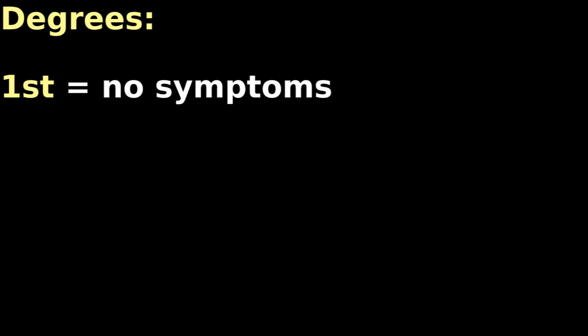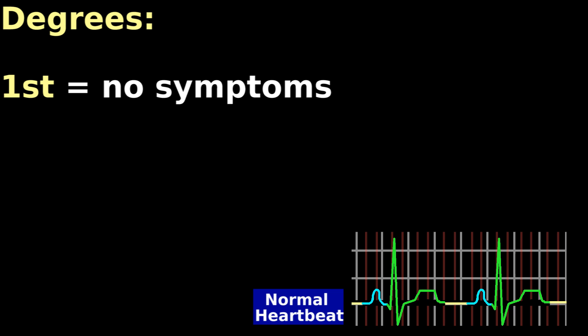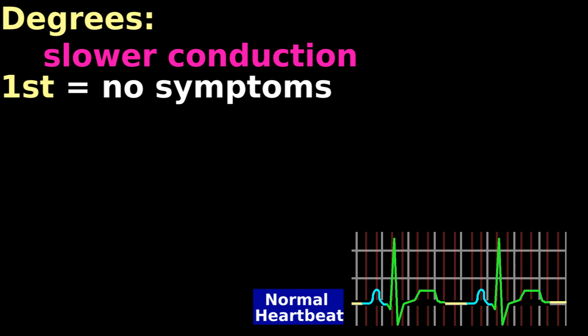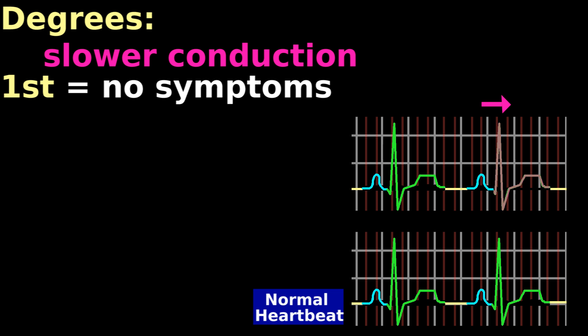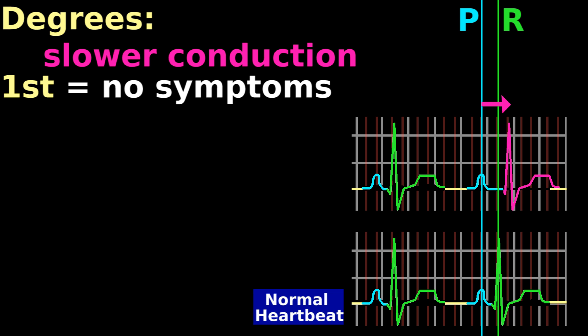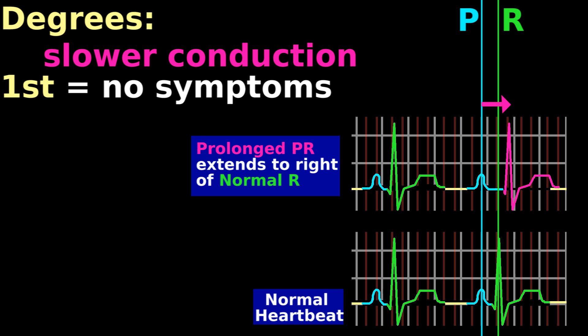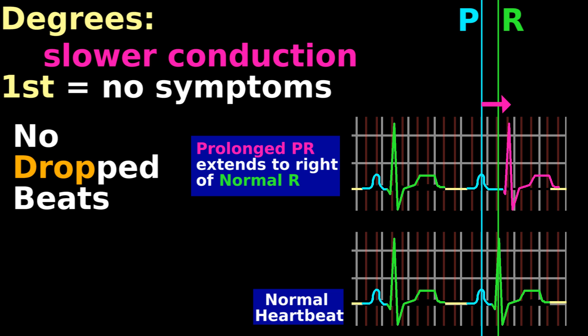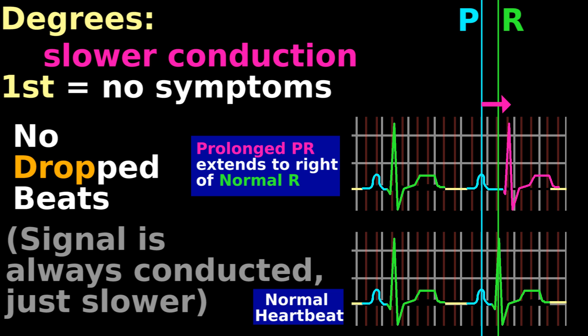There are three degrees of AV blocks. First degree is asymptomatic — it just means that the heart is beating slower, as if the signal is taking longer to move from the atrium to the ventricles. But you're not dropping beats, so you don't really notice any problems.